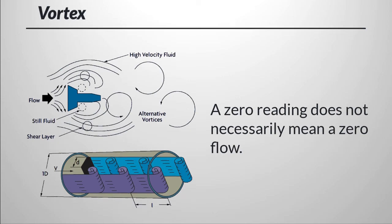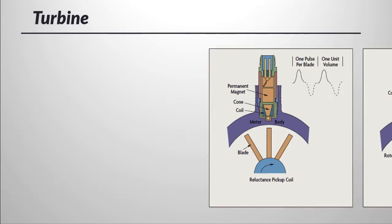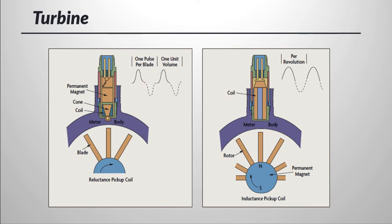A turbine flow meter consists of a multi-bladed rotor mounted at right angles to the flow and suspended in the fluid stream on a free-running bearing. The diameter of the rotor is very slightly less than the inside diameter of the metering chamber, and its speed of rotation is proportional to the volumetric flow rate. Turbine rotation is detected by solid-state devices or mechanical sensors.